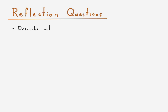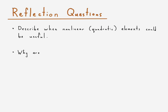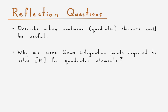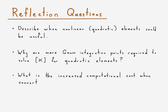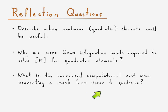Our reflection questions: First, describe when nonlinear or quadratic elements could be more useful than linear elements. Second, why do quadratic elements require more Gauss integration points to solve the stiffness matrix? Third — as further reflection — what is the increased computational cost when converting a mesh from linear to quadratic? That wraps up this discussion on nonlinear quadratic isoparametric elements, focusing on the nine-node element in particular.